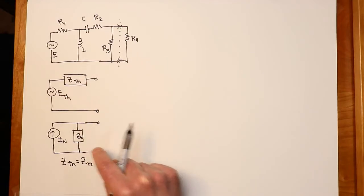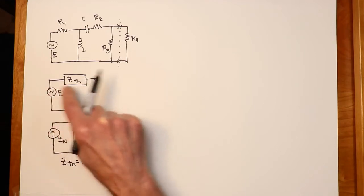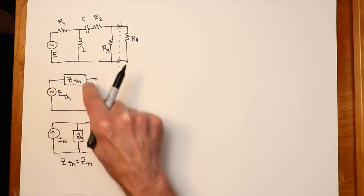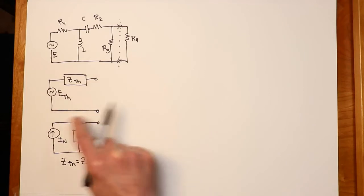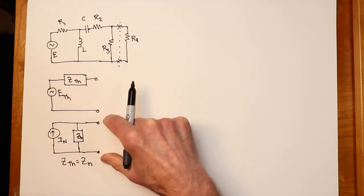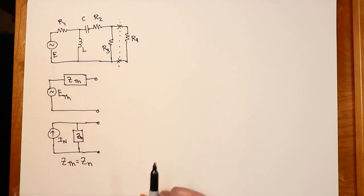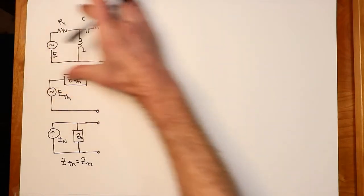So again, just to remind you, the value of I-Norton here would be determined from the short circuit current, E-Thevenin divided by Z-Thevenin. And if you had this one going back the other way, we would find the open circuit output voltage. I-Norton times Z-Norton would give us the E-Thevenin back here. So in any case, let's take a look at this.